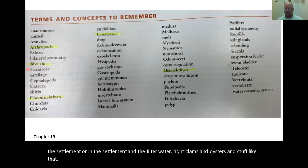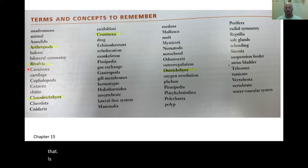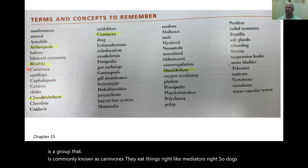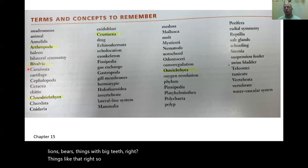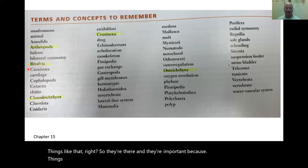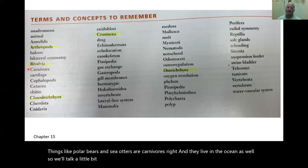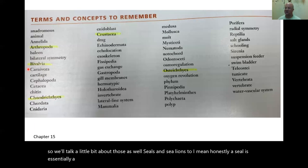Carnivora is the group commonly known as carnivores — meat eaters. Dogs, cats, lions, bears — things with big teeth. They're important because things like polar bears and sea otters are carnivores that live in the ocean. Seals and sea lions too. Honestly, a seal is essentially a dog — it's a dog that swims in the ocean.